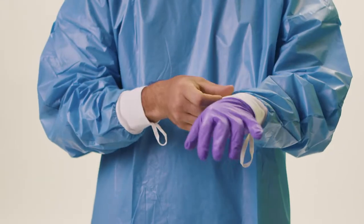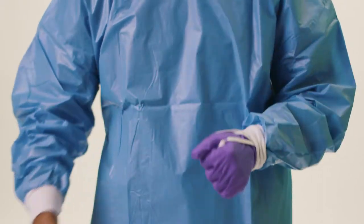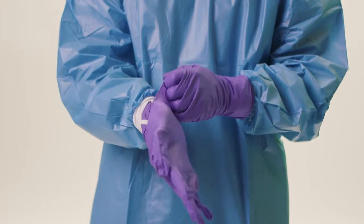Put on the first pair of gloves. Make sure to place the thumb loops over your gloved thumbs. Put on the second pair. Be certain that it covers the gown's knit cuffs.